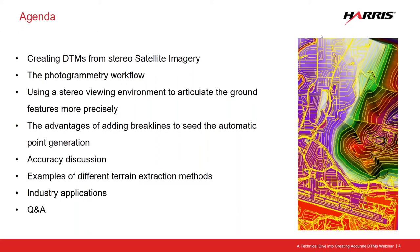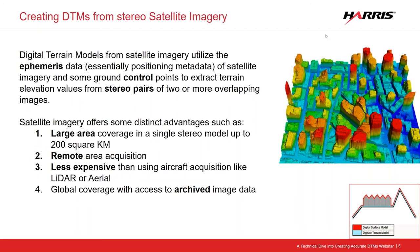Creating DTMs from stereo satellite imagery — the stereo is the key. A stereo model is an area collected in the same spot from two different angles, essentially creating a stereo viewing environment. The digital terrain models from satellite imagery utilize the ephemeris data — information embedded in the positioning metadata of that satellite scene — along with some ground control points to extract terrain elevation values from stereo pairs of two or more overlapping images.